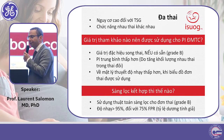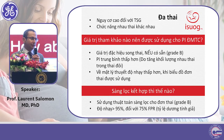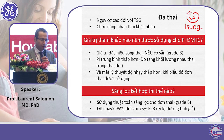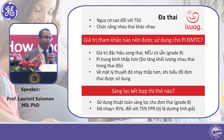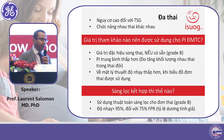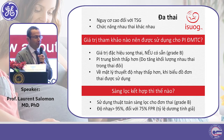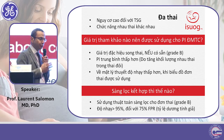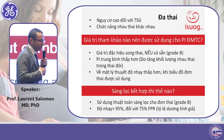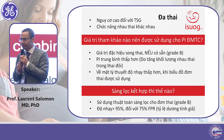For multiple pregnancies, little is known. There are twin-specific ranges, but we suggest using the same screening strategy as in singleton pregnancies.